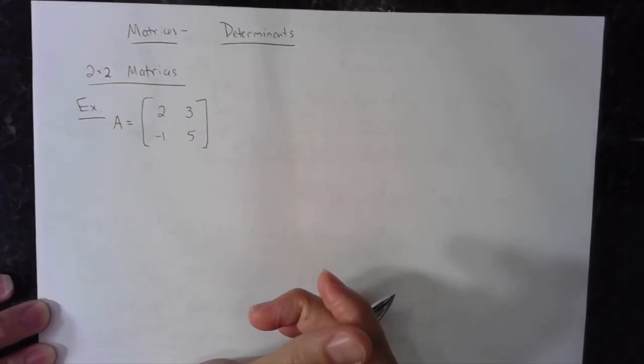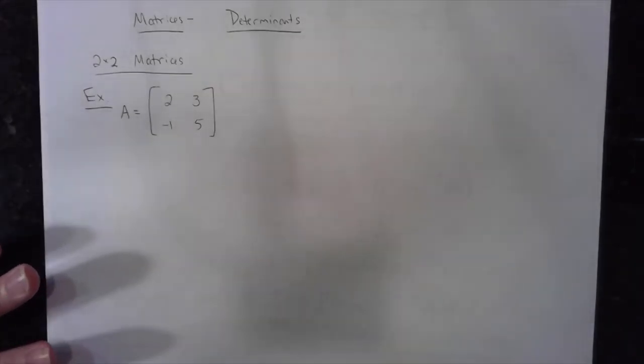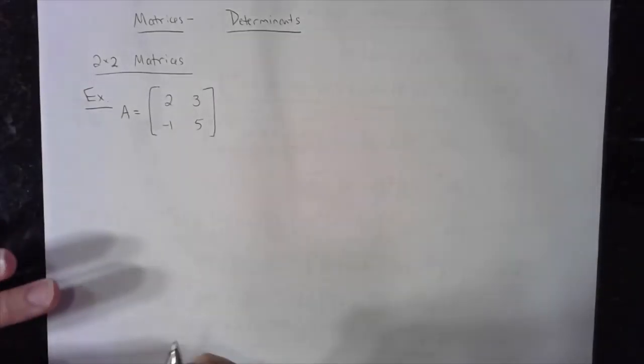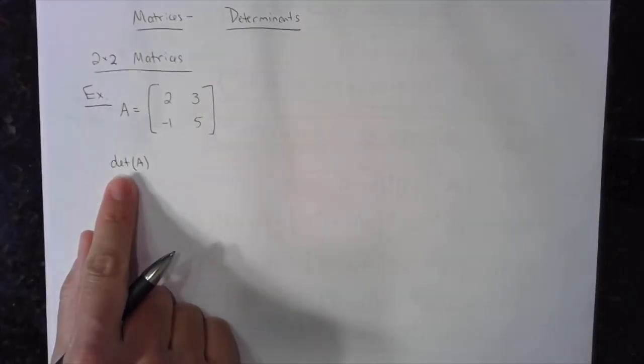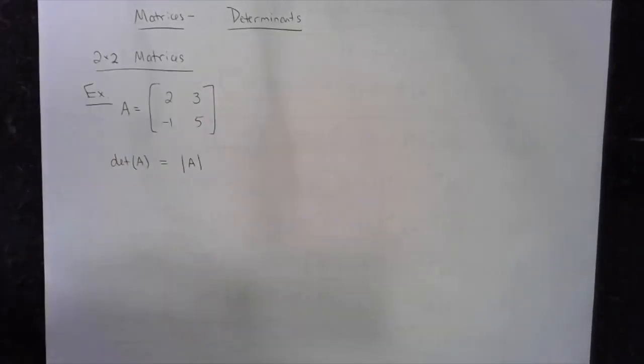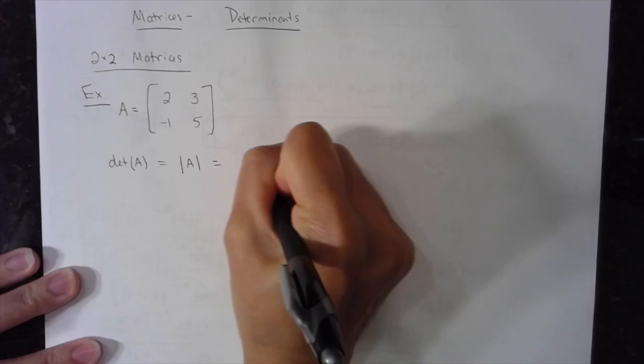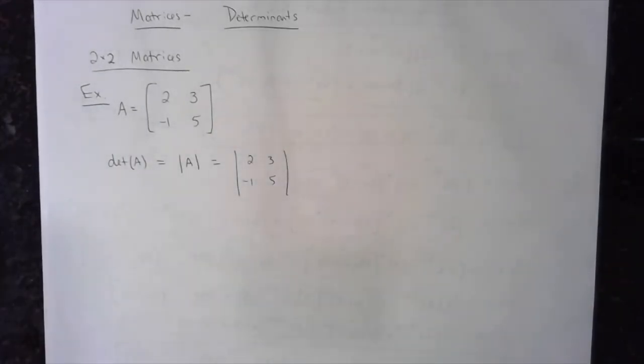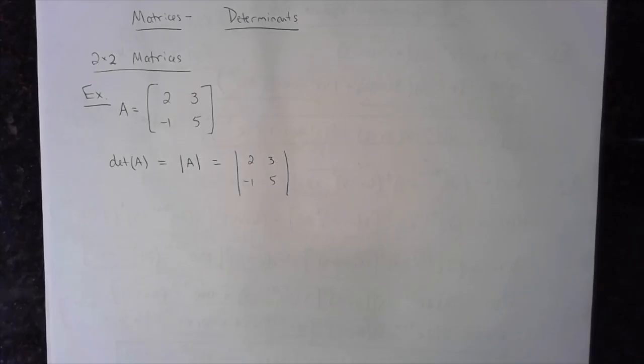Matrix A is defined to be this matrix with two rows, two columns, and these elements within. I want the determinant of matrix A. I can represent the determinant in a couple different ways: I can say determinant of A, or if you see a matrix with an absolute value sign around it, or I can write the elements with those two vertical lines. Each of these are representations of finding a determinant.